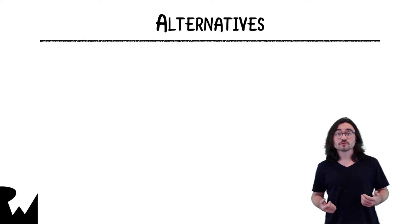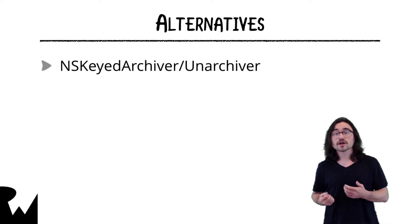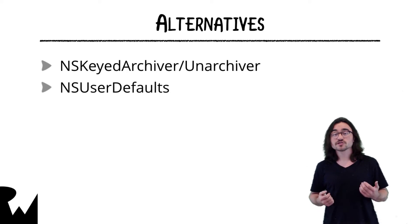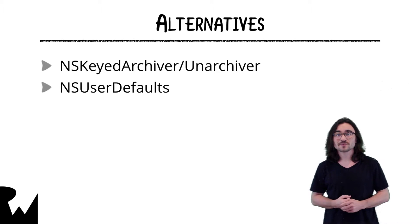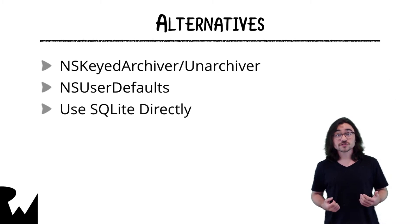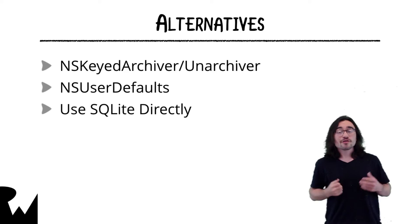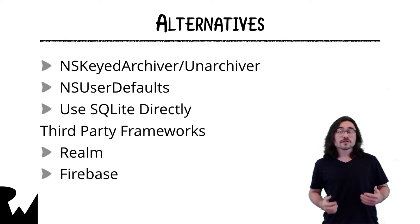Of course, Core Data isn't a silver bullet. Depending on your app's needs, there are a lot of options when it comes to persistence. NSKeyedArchiver can be used to quickly store an array of NSCoding compliant objects which can be retrieved later. And NSUserDefaults is a convenient place to store one-off bits of information, such as user preferences. On the other end of the spectrum, if you want to use a database and consider yourself a SQL expert, you can always just use SQLite directly. This does mean you lose out on a lot of the conveniences of using a framework like Core Data, but if done correctly, could mean a more efficient solution. There are also a number of third-party frameworks, some of which wrap Core Data itself, and others of which are completely unrelated.